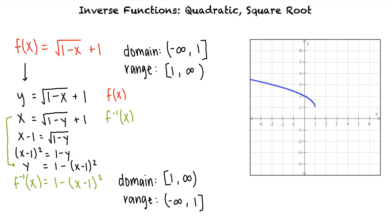After simplifying, we see that our final answer is f inverse of x equals 1 minus the quantity x minus 1 squared for the domain 1 to infinity.